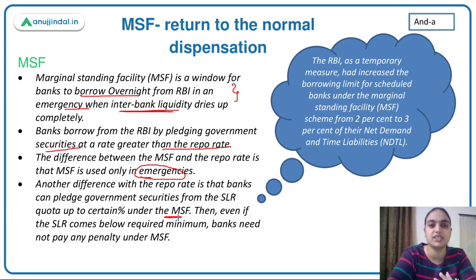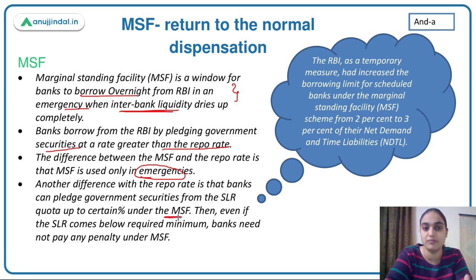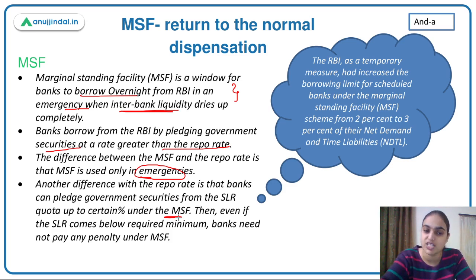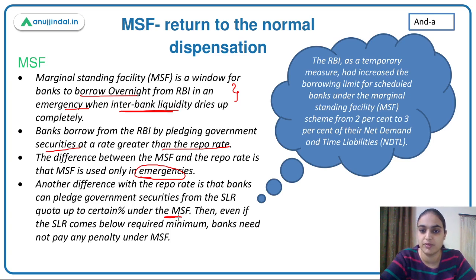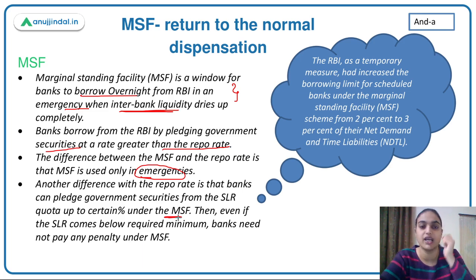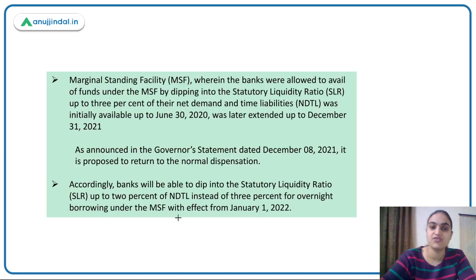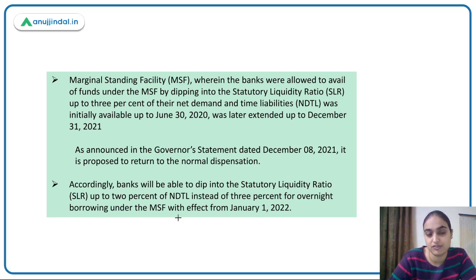Even if your SLR falls below the required minimum when you pledge securities under MSF, you don't have to pay a penalty — this is a key difference from the repo rate arrangement. As a temporary COVID-era measure, RBI increased the MSF borrowing limit to three percent of NDTL.